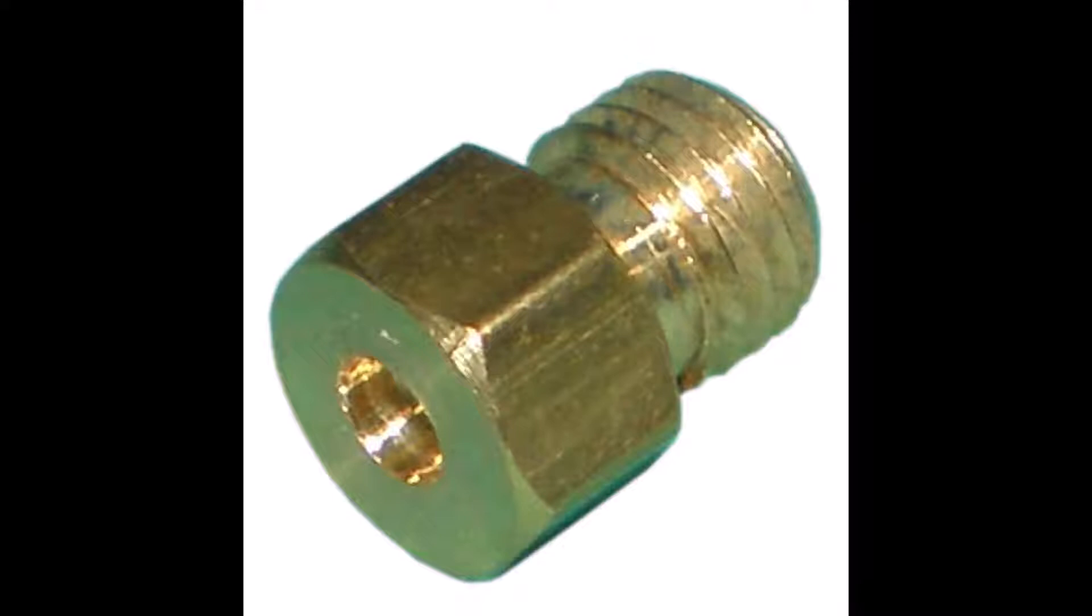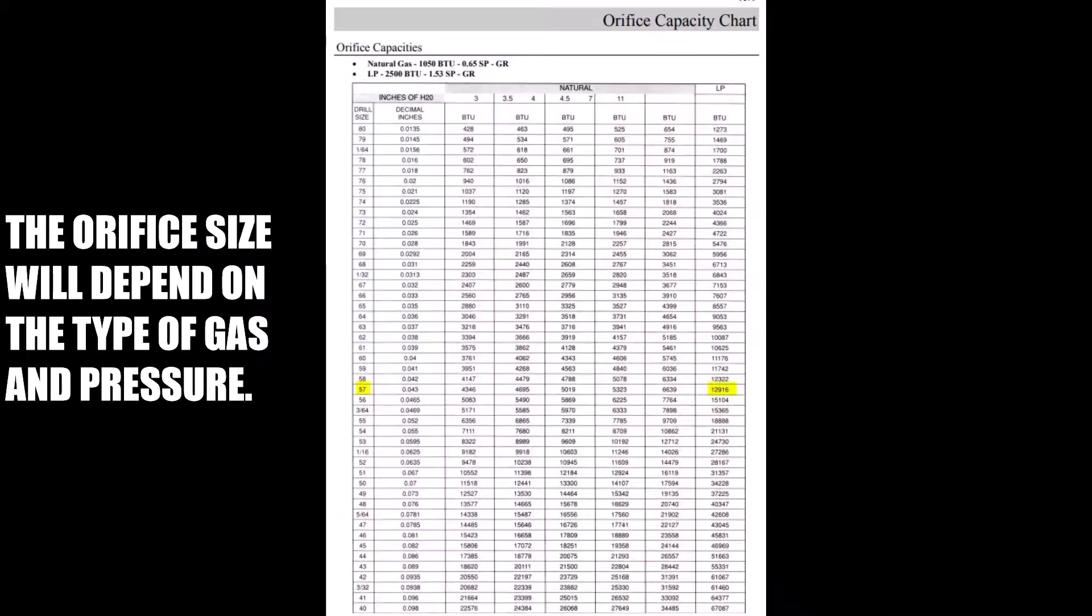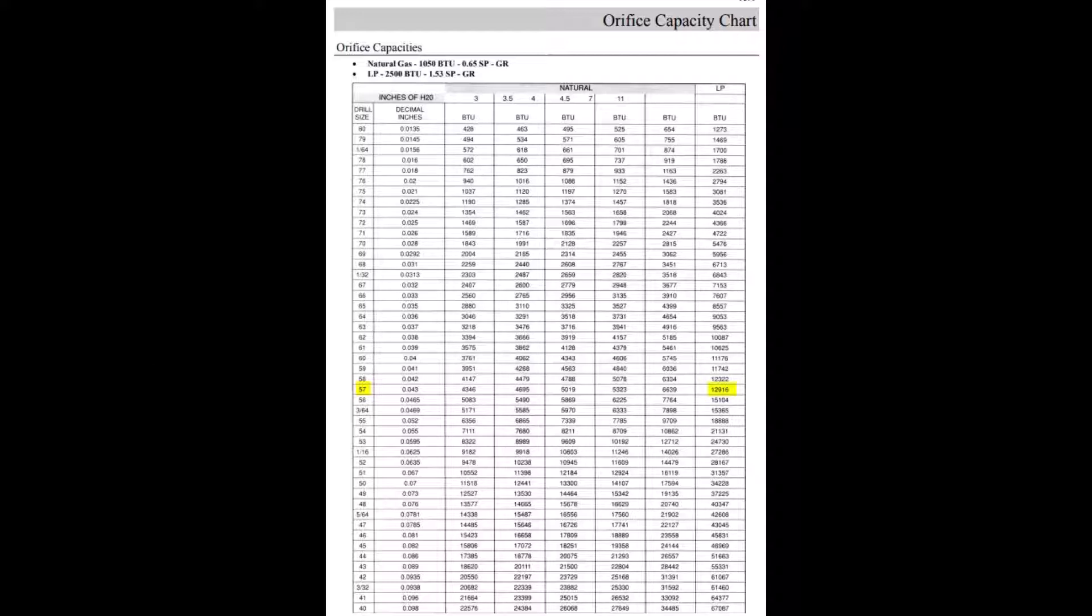In order to determine the hole size that I need in the orifice, I just did a quick Google search for BTU orifice chart. I know from reading literature that the burners in the grills are about 13,000 BTUs. So using this chart, I found 13,000 BTUs, followed it over to the drill size, and ordered a number 57 drill bit.